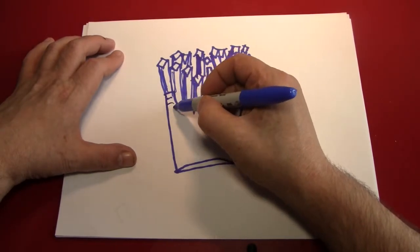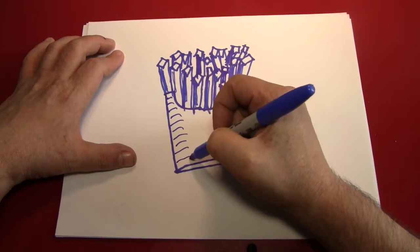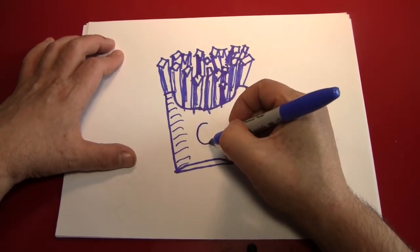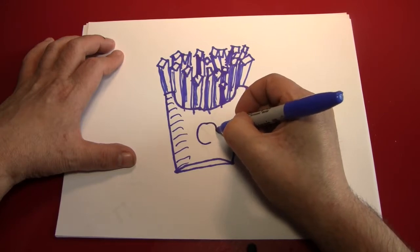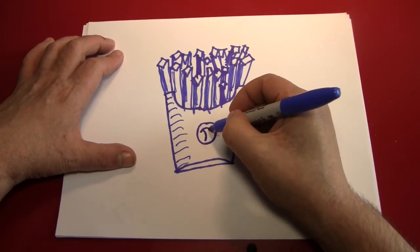And if you want, you can even decorate the box. Give it some shadowing or a pattern. Maybe you want to put a logo on to it. Remember, it's easy to draw a circle if you just draw two halves of it. Then you can put whatever symbol you would want. I'm going to put a pie on my fries.